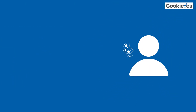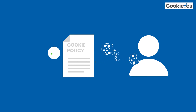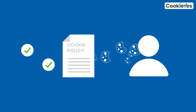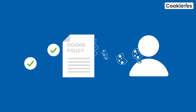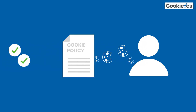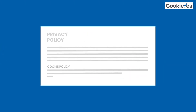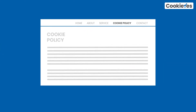A cookie policy is a statement that discloses details about cookies used by your website and their purposes for GDPR and CCPA. It can be part of your privacy policy or a separate page on your website.